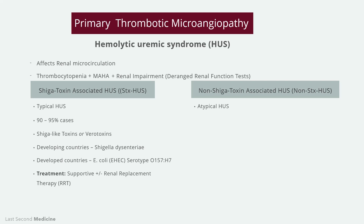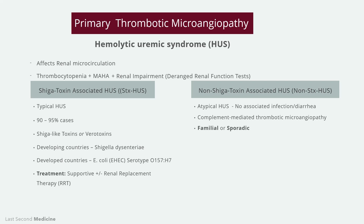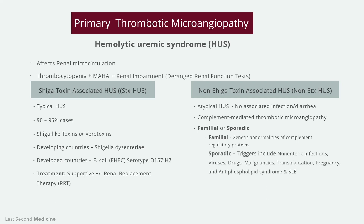Atypical or non-Shiga-associated HUS is not associated with infection, and there will be no history of diarrhea. Rather, it is a complement-mediated thrombotic microangiopathy. It is either familial or occurs as sporadic cases. The familial form is associated with genetic abnormalities of the complement regulatory proteins. Various triggers for sporadic non-Shiga toxin HUS have been identified, including non-enteric infections, viruses, drugs, malignancies, transplantation, pregnancy, and in rare cases, other underlying medical conditions like antiphospholipid syndrome and SLE.